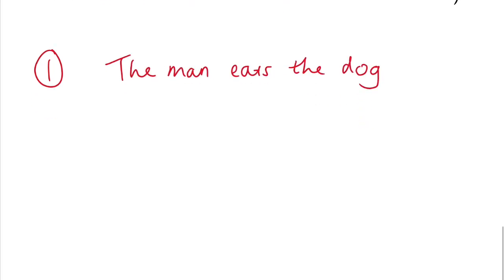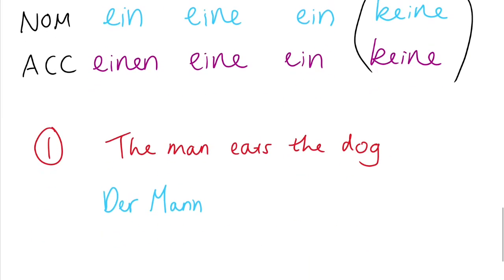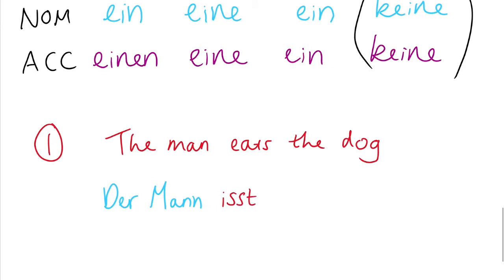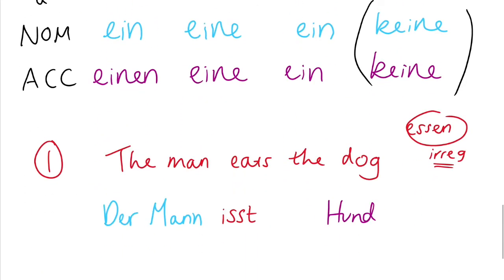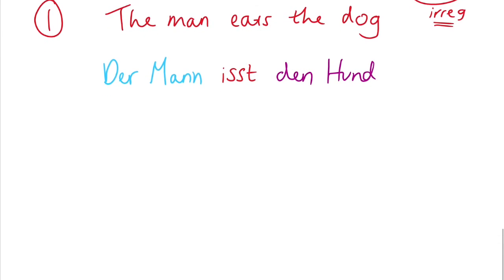So have a look at the sentence here in English. The man eats the dog. Now how are we going to translate that into German? Der Mann, a man is nominative. We use der. Isst comes from the verb essen, which is regular. It means to eat. And now the dog, it's going to be in the accusative. So have a look at our table. We need the accusative masculine, den. Simple enough.